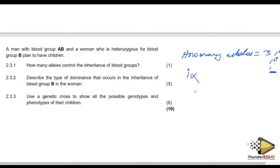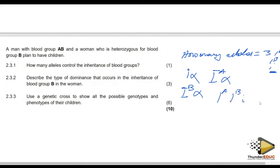Please don't modify these alleles when you write them. Allele for O — don't cross it like a zero. Allele for A uses a Roman figure I, not a regular letter. For allele B, you write capital I then B; for allele O, you write small i. If you modify them, you will get zero marks.